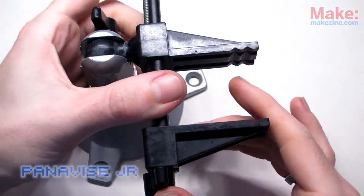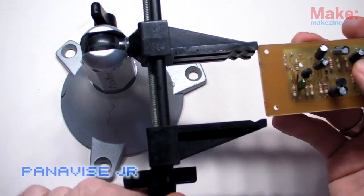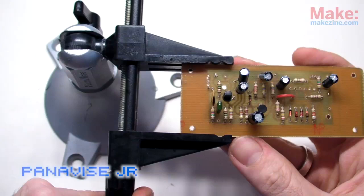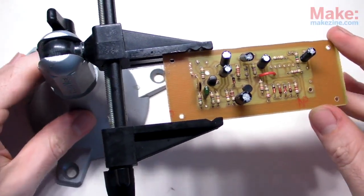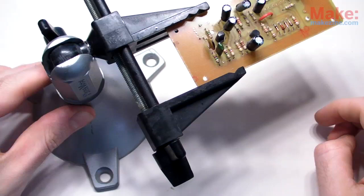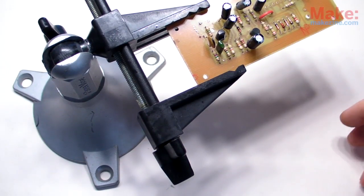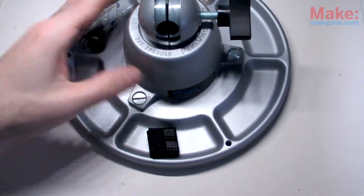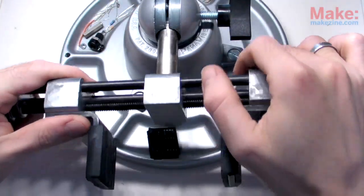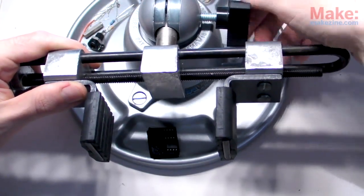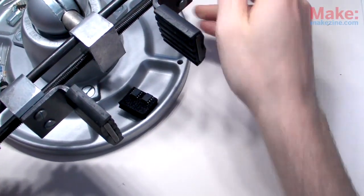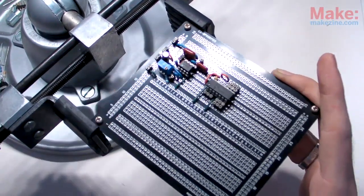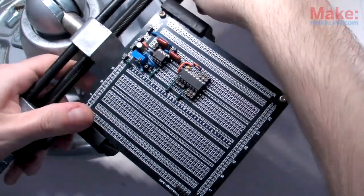You're much better off using one of the ever-popular Panavise Juniors for board-holding tasks. These things are really sturdy, provide an excellent grip, and can even be mounted to your benchtop for extra stability. And when you're ready to graduate from the Junior model, Panavise also sells a few different types of heads and bases, which work well with larger and unusually shaped boards. Serious business. Heavy duty.